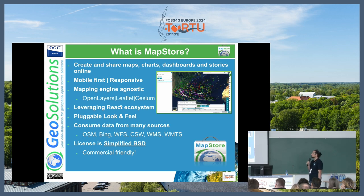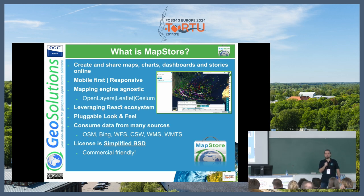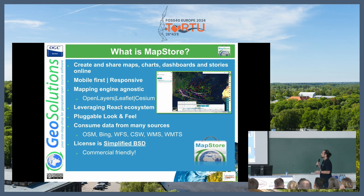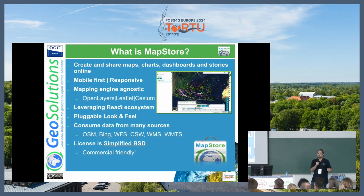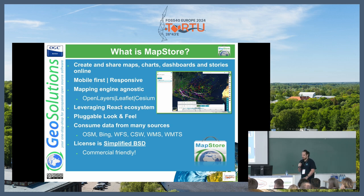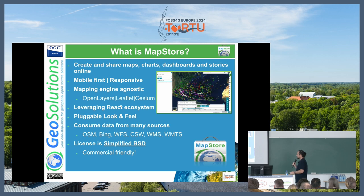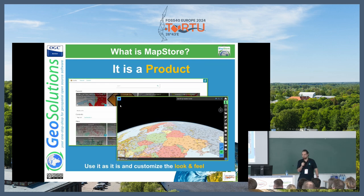MapStore is mapping agnostic — it's independent from the mapping library. It supports OpenLayers, Leaflet, and Cesium. If one of these libraries goes out of maintenance or we find a new library, we can switch or integrate it without losing our development. It's built with React, so React developers can understand the code. It's highly pluggable in terms of functionalities and look and feel. It can consume data from open standards like OpenStreetMap, WFS, WCS, and WMS — typically but not only provided by GeoServer. The license is BSD, so it's free and commercially friendly.